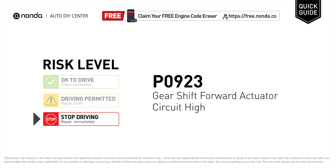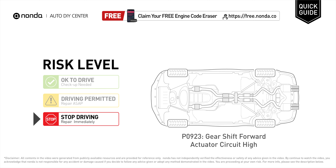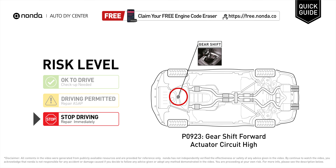P0923 is a diagnostic trouble code for gear shift forward actuator circuit high. Under this circumstance, stop driving and repair your vehicle immediately. It means the PCM has detected a variation in the voltage coming from the gear shift forward actuator circuit that is above the normal limits set by the vehicle manufacturer.